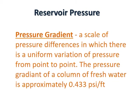To begin our talk on reservoir pressure, let's first define the term pressure gradient. Pressure gradient is a scale of pressure differences in which there is a uniform variation of pressure from point to point. The pressure gradient of a column of freshwater is approximately 0.433 psi per foot.